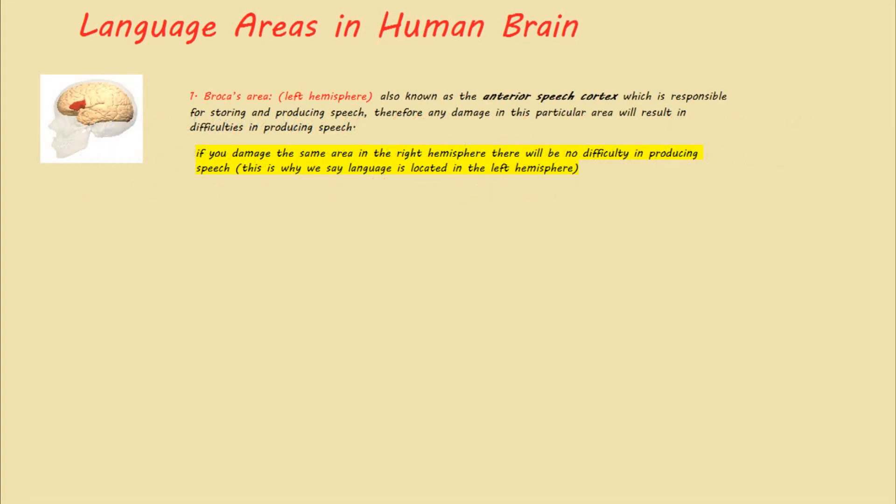The first area to talk about is Broca's area. It is situated in the left hemisphere and is also known as the anterior speech cortex. It is responsible for storing and producing speech. Therefore, any damage in this particular area will result in difficulties in producing speech — the person may even lose their ability to produce speech entirely.